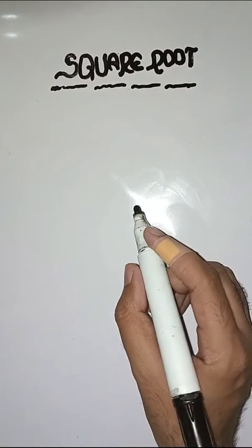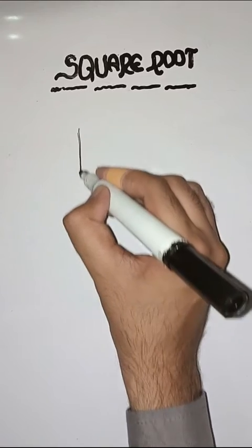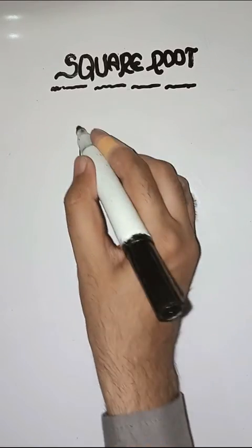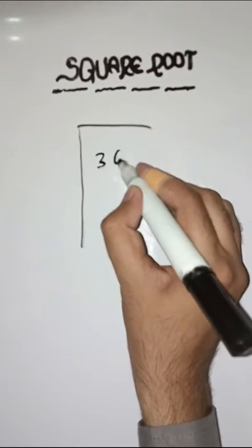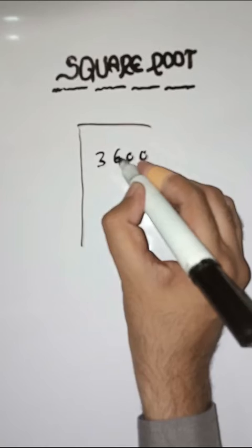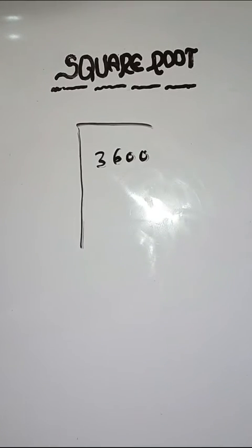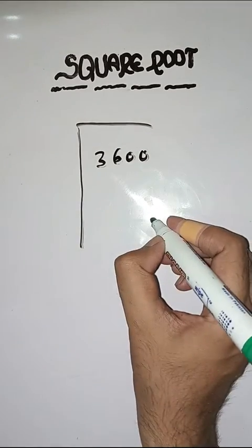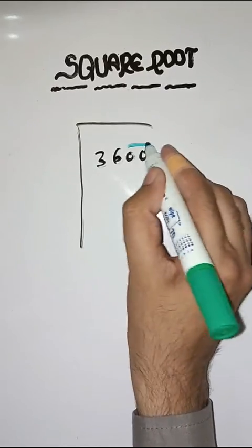We have to find the square root of 3600. So students, what will we do? The first step is we have to make pairs from right to left.